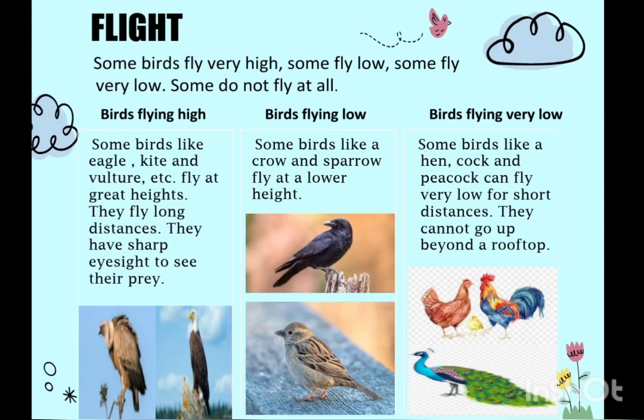Some birds fly very high, some fly low, some fly very low, and some do not fly at all. Birds flying high: Some birds like eagle, kite, and vulture fly at a great height. They fly long distances and have sharp eyesight to see their prey. Prey is the animal they hunt to eat.